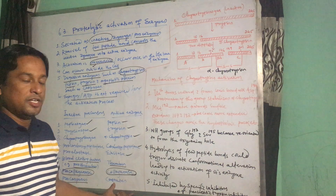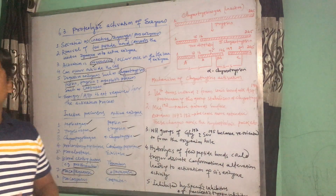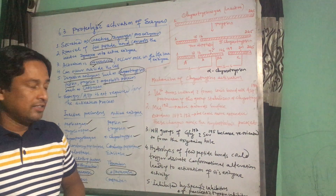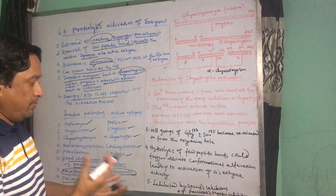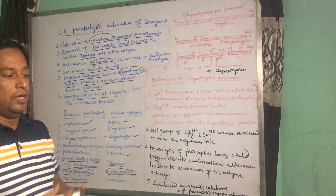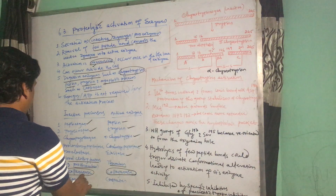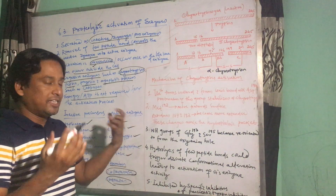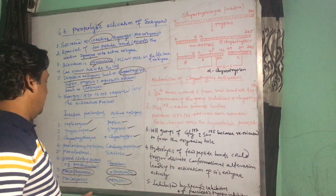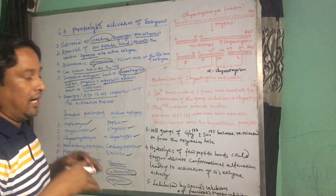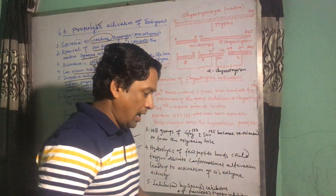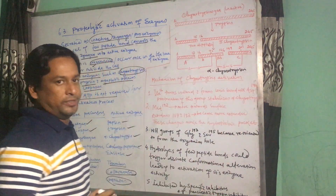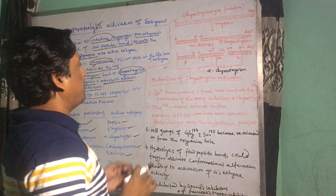Similarly, pro-caspases become caspases. Caspases are activated when there is induction of the apoptotic pathway, which is programmed cell death. Normally in functional cells that are not going to die, caspases are not formed. Once a cell gets a death signal from outside or inside, the pro-caspases become caspases and they activate the apoptotic pathway.